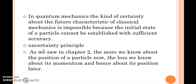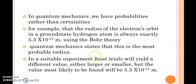The uncertainty principle is there in the macroscopic world also, but we can neglect it because in the macroscopic world the uncertainty is very small and we can neglect it. In quantum mechanics, if the initial position and momentum cannot be determined accurately, the future position and momentum will be uncertain. In quantum mechanics, we have probabilities rather than certainties.